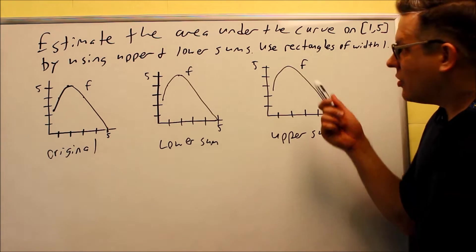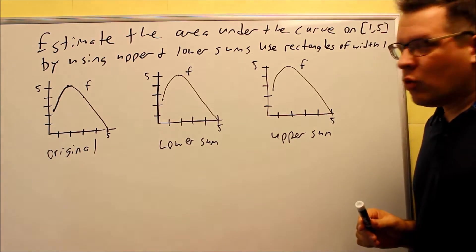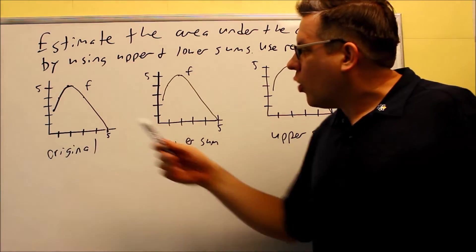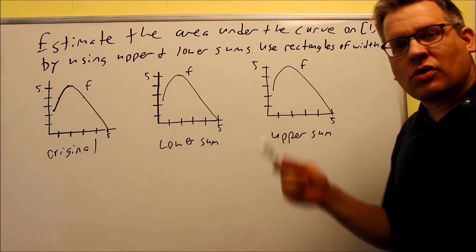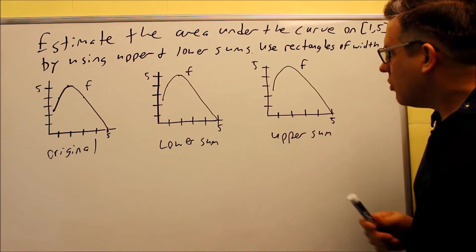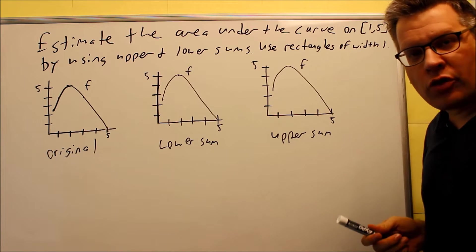Okay, for this problem, they tell us that we're working with this curve, so here's the original one. We're only working between 1 and 5, and we want to estimate the area using lower sums, and we're also going to do upper sums. It's telling us that they want us to use rectangles of width 1.